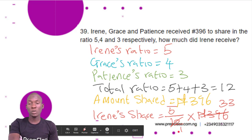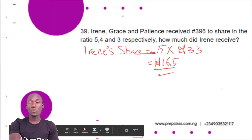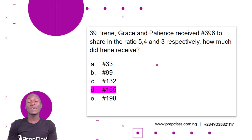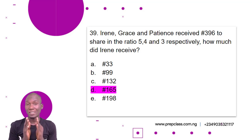12 in 396 is 33 — since 12 in 39 is 3 remainder 3, and 12 in 36 is 3. So Irine's share equals 5 multiplied by 33, which gives us 165. The correct option is option D, 165 Naira. It means when they share the money, Irine will receive 165 Naira out of 396 Naira.